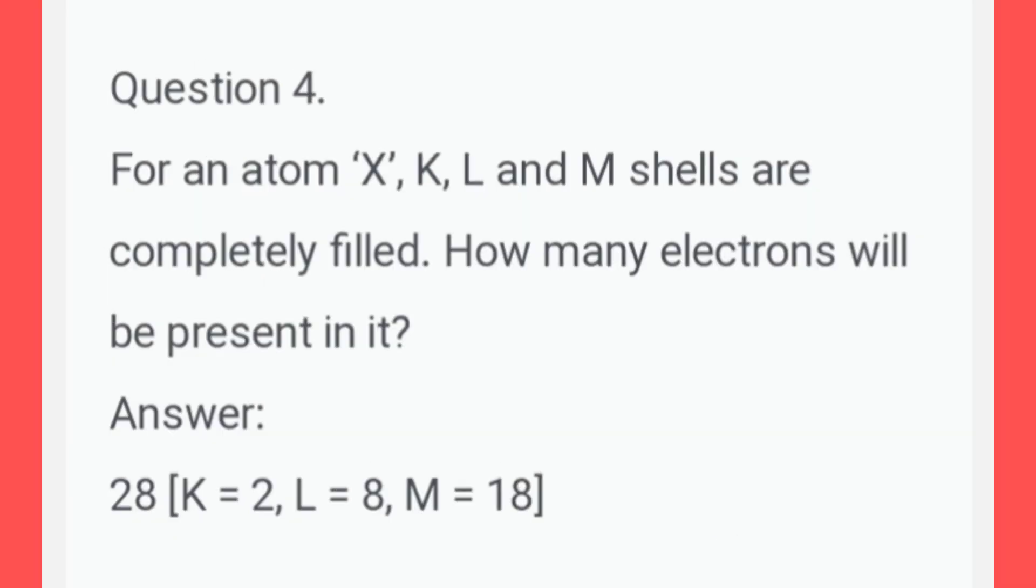Question number 4. For an atom, X, K, L and M shells are completely filled. How many electrons will be present in it? Answer 28. K is equal to 2, L is equal to 8, M is equal to 18.